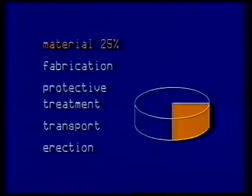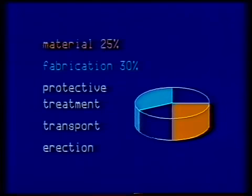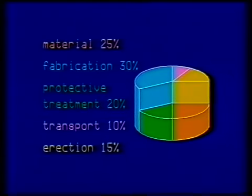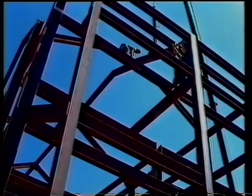The cost of erected steelwork can be broken down into the following elements. Typically, the proportion of the total cost might be: material, 25%; fabrication, 30%; protective treatment, 20%; transport, 10%; erection, 15%. But these figures may vary tremendously from one type of steelwork to another. Poor connection design can easily double the cost of fabrication, transport and erection. It can affect the quantity of material and thus the cost of protective treatment. So, good connection design is vitally important in the production of economic steelwork.